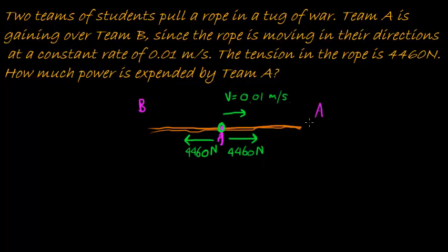Team A is not exerting more force than Team B because it's at a constant rate. Velocity is constant, which means that the force exerted by A and B is the same because the net force is zero. In these types of questions, we can ignore the weight of the rope.